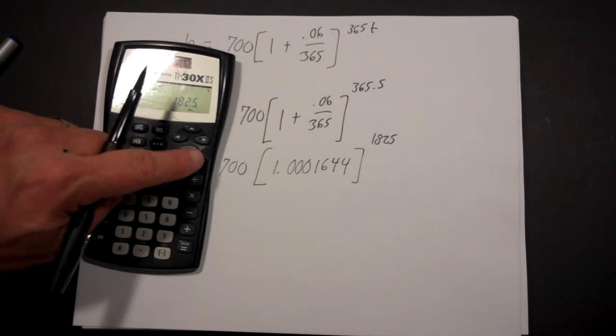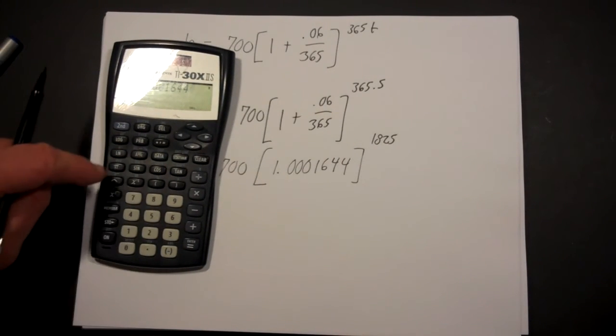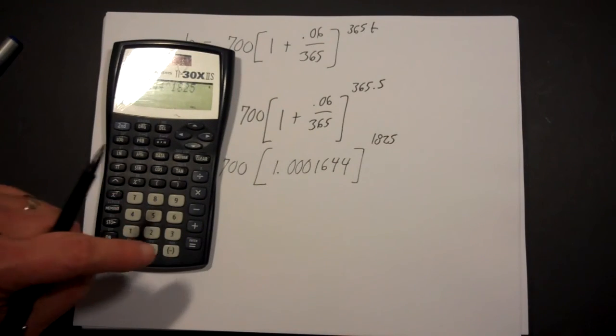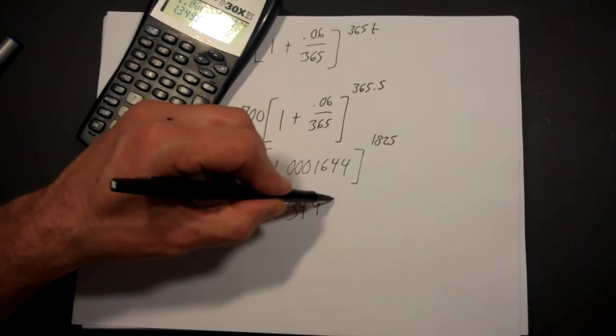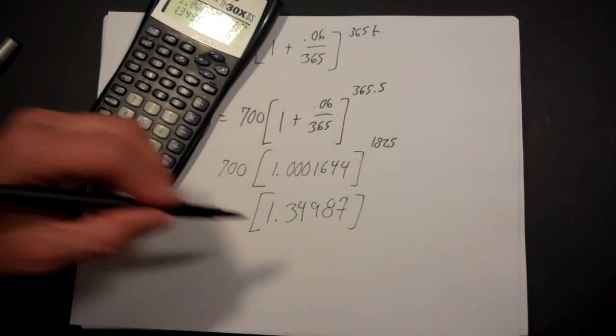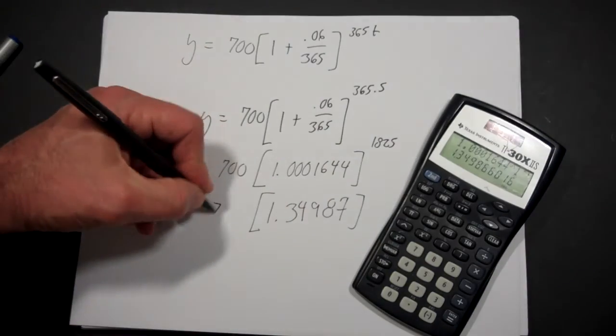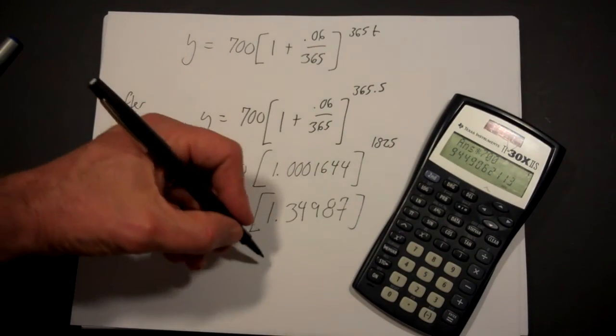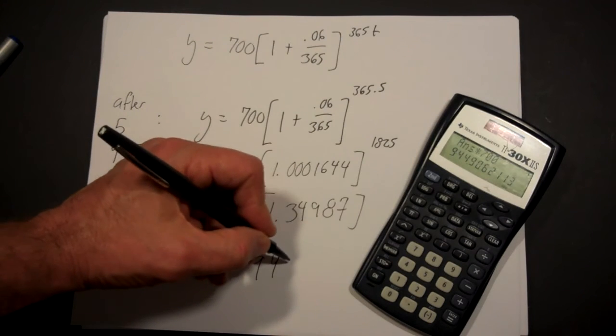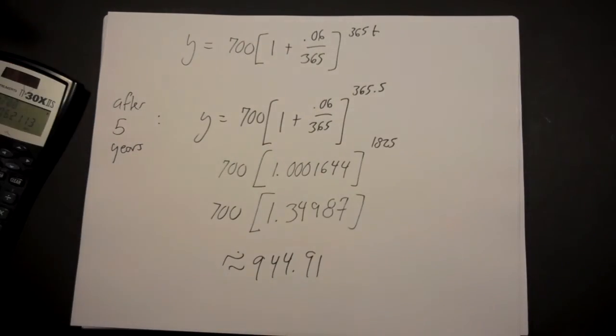Then you raise to the power. So that's 1.0001644 raised to the 1825, and you get 1.34987. Now I actually wouldn't round this at all, I would just leave the numbers in my calculator. I'm just rounding to show you each step. Then I multiply that by 700, and I get $944.91 more or less. And that's all you do, that's how you solve this problem.